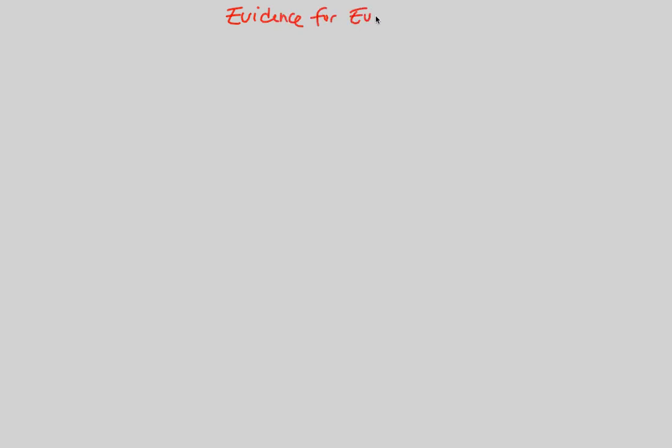Now that we've established the legend that Charles Darwin was, you might be asking yourself: what is the evidence behind all of these things that we just stated? How do we know any of this is even influential today, and how do we know that it runs true today? We're going to continue the next couple of flowcharts by entitling them 'Evidence for Evolution,' and this first one will be Roman numeral I.